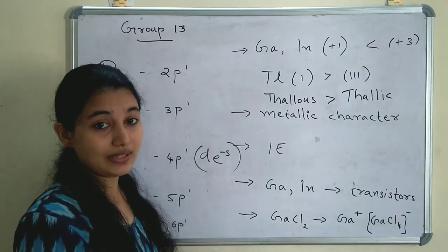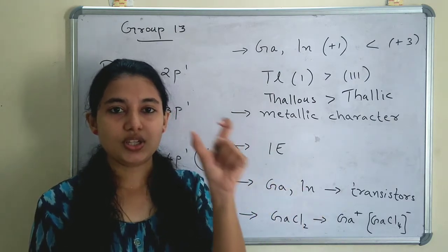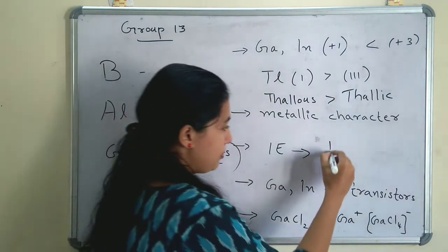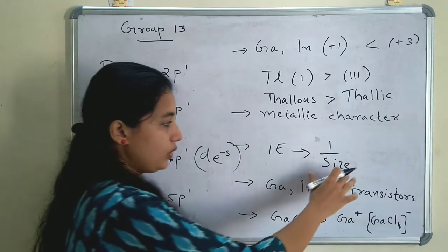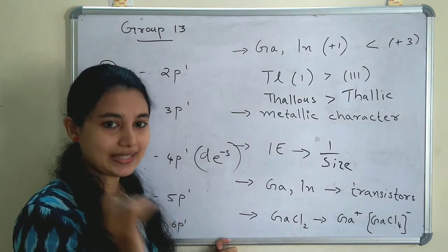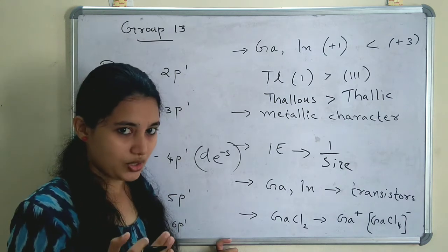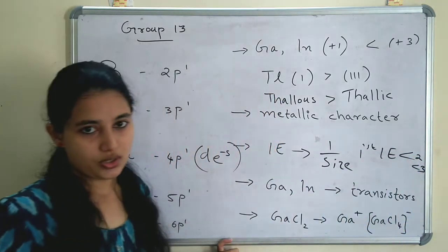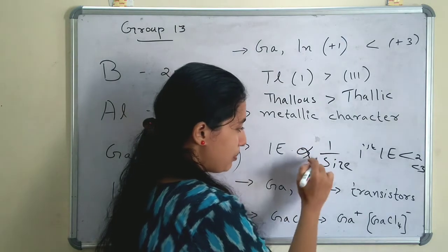They are not becoming more electropositive compared to other group elements. Now ionization energy — the energy required to remove the outermost electron to form an ion. Ionization energy is proportional to 1 divided by size. Smaller the size, greater the ionization energy. Down the group, size increases, so ionization energy decreases. First ionization energy is less than second ionization energy, which is less than third ionization energy. Ionization energy is proportional to 1 by size.